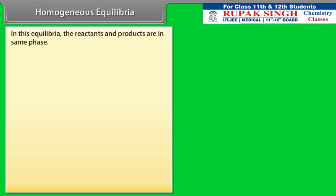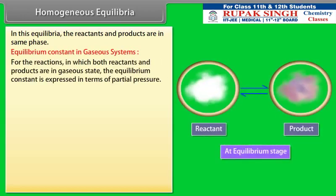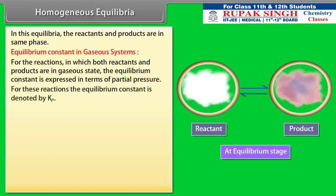Homogeneous Equilibria: In this type of equilibria, the reactants and products are in the same phase. Equilibrium constant in gaseous systems: For reactions in which both reactants and products are in the gaseous state, the equilibrium constant is expressed in terms of partial pressure and is denoted by Kp. The ideal gas equation is PV = nRT, which gives P = (n/V)RT.